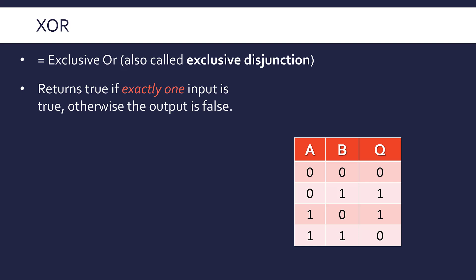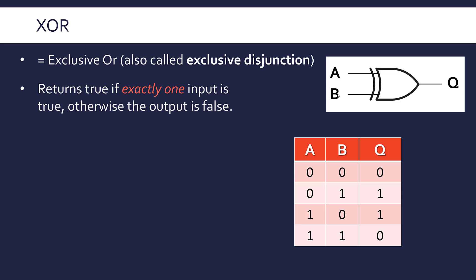The truth table shows every combination of XOR. If A and B are the inputs, Q is our output. We only get true outputted when the inputs are different — exactly one input is true. A normal OR would have 1, 1, 1 here: when it's 1 OR 1, you'd get 1. But with XOR, 1 XOR 1 is 0.